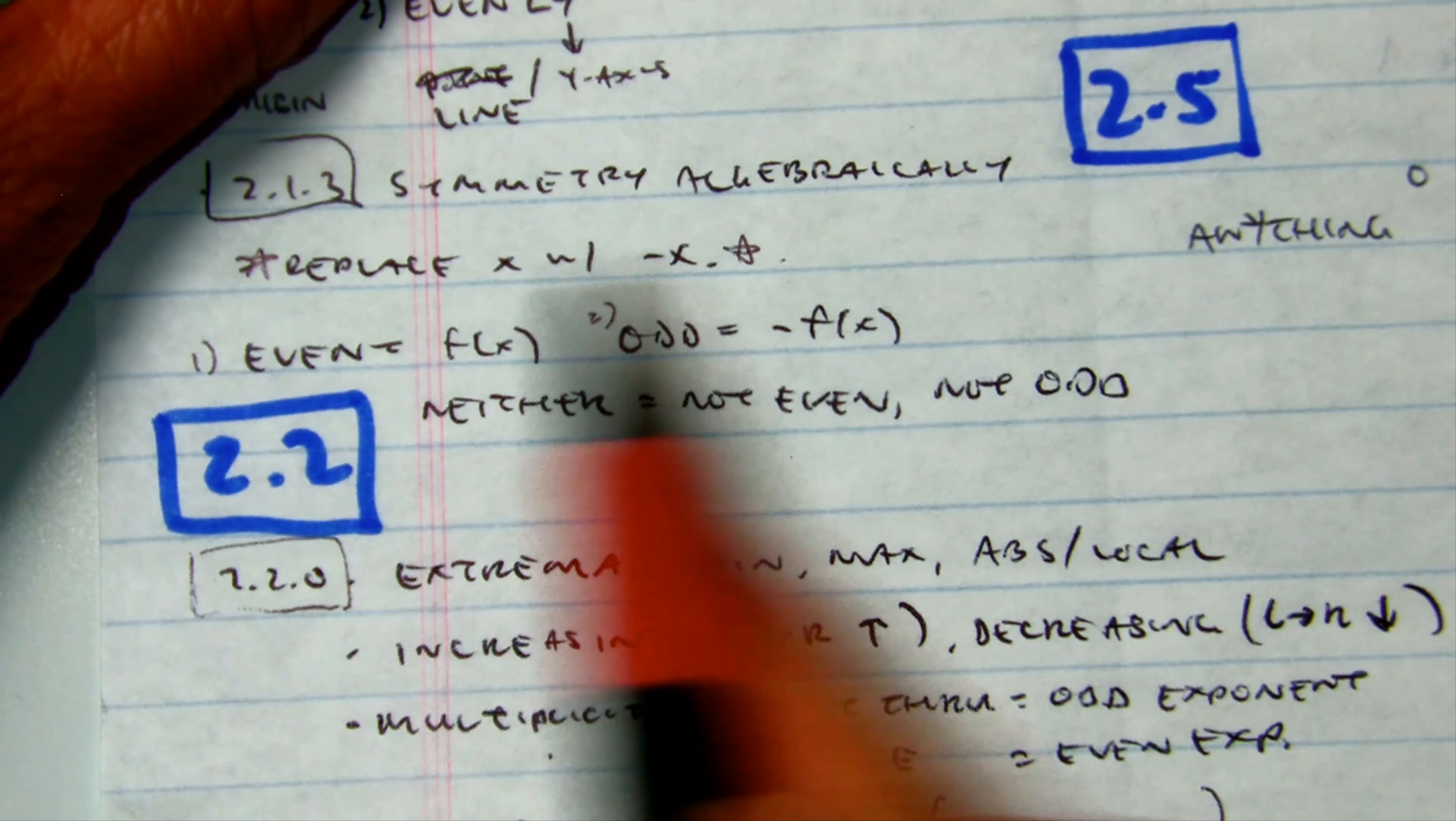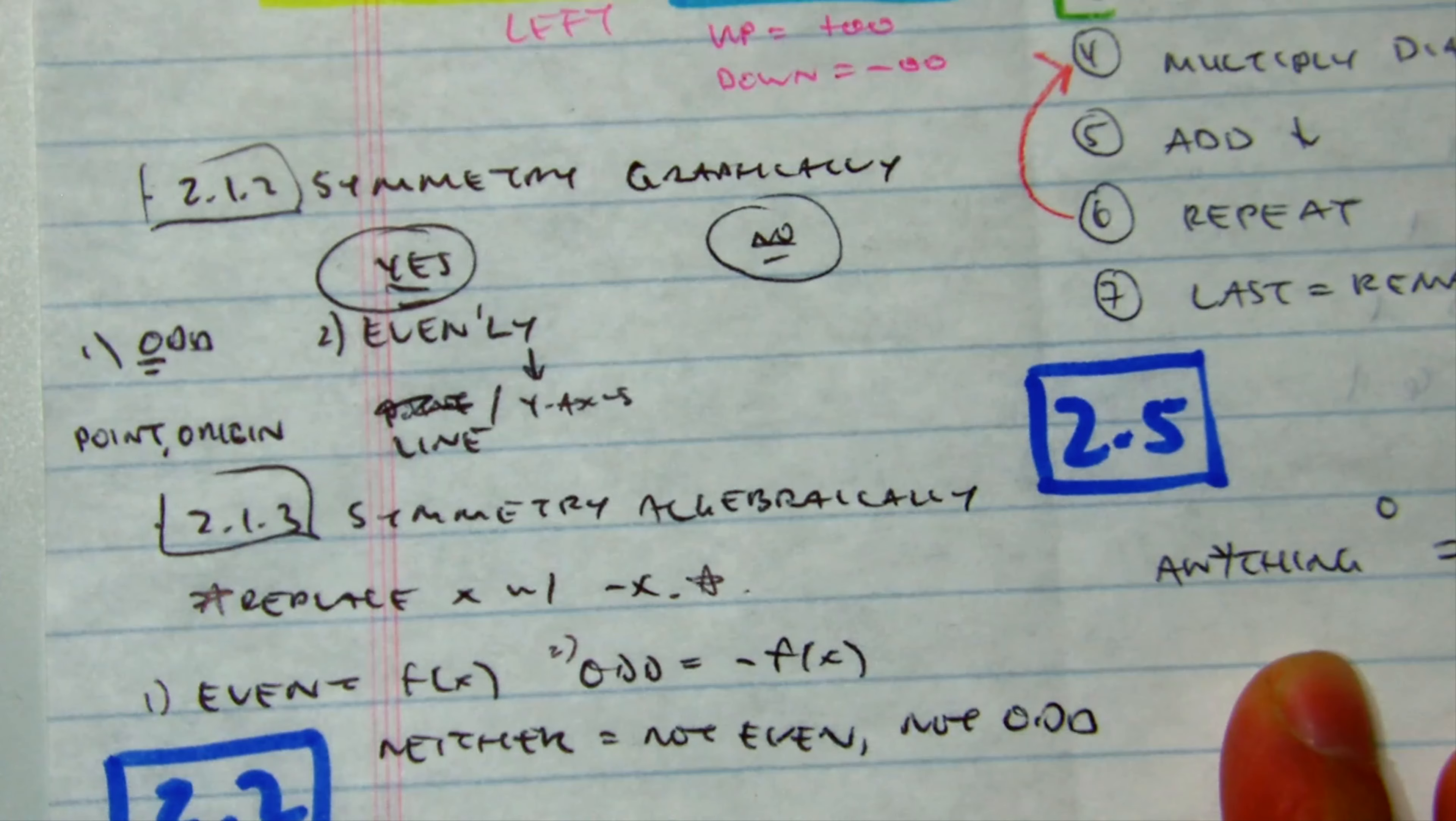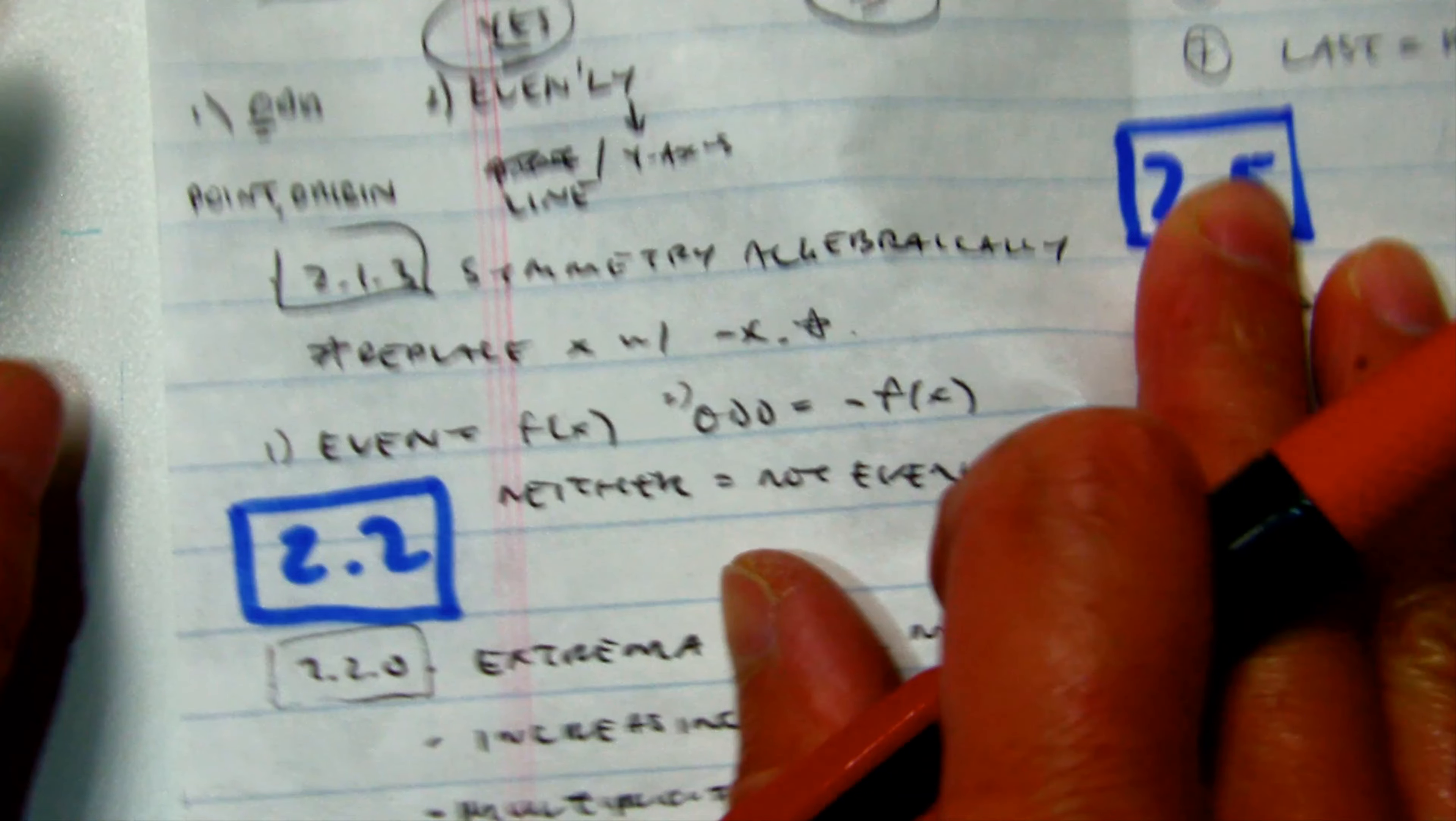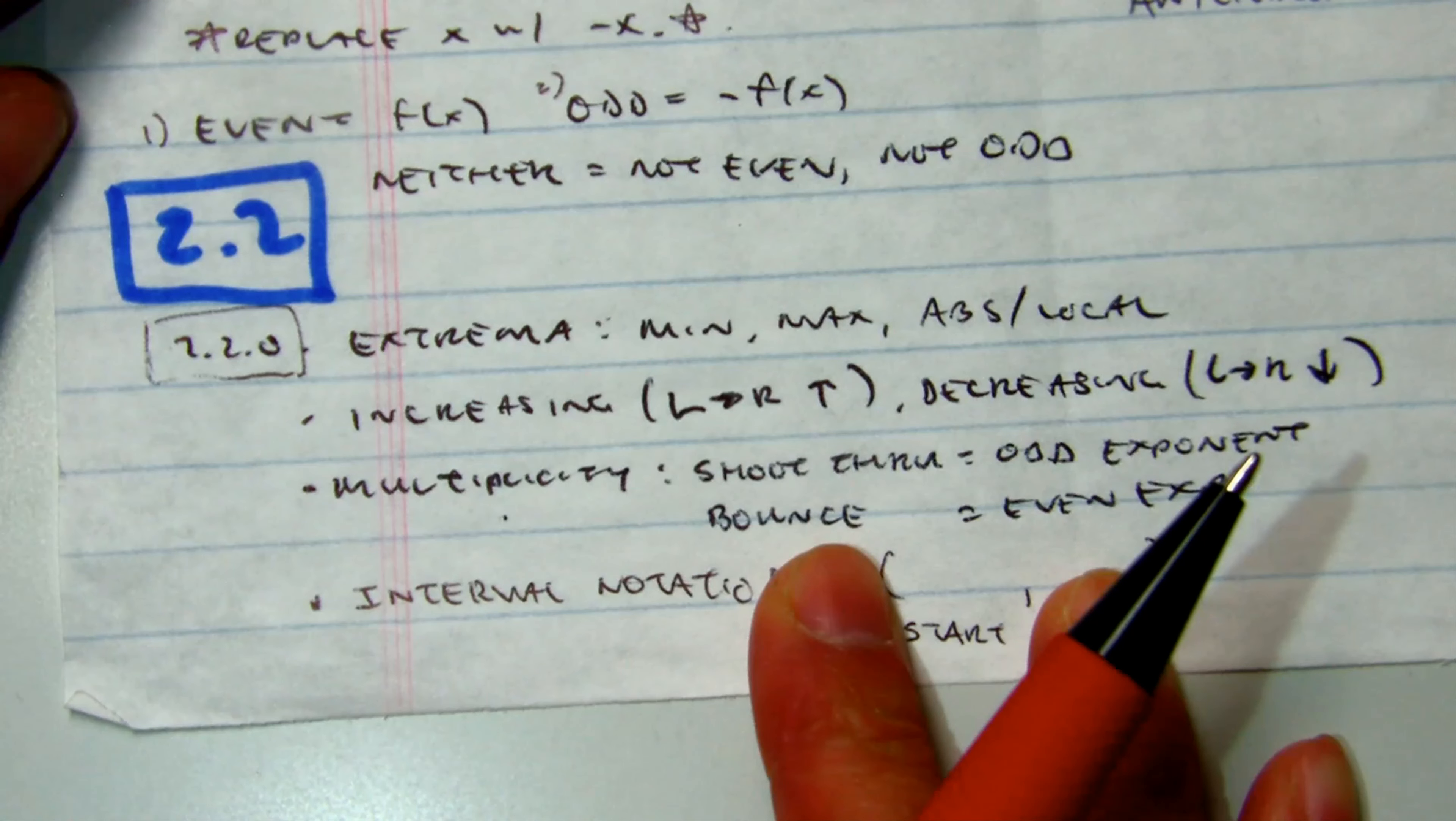And if it's not this, not this, the answer is neither. It's not even, not odd. Remember that big idea in the back of packet 2.1 is there are things called the degree and even or odd, right? x to the first is the easiest odd. x to the second is the easiest even. But this one is talking about even, odd symmetry. So it's using the same word odd and even, but they mean different things.